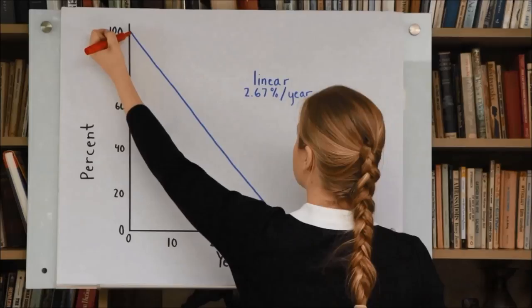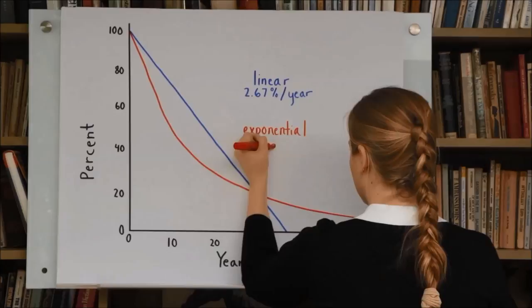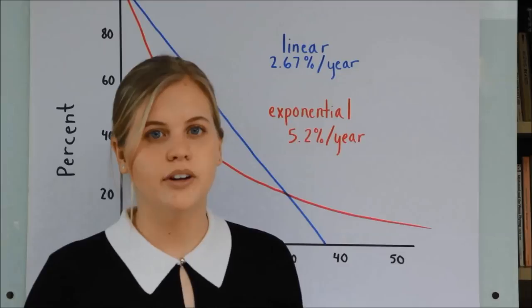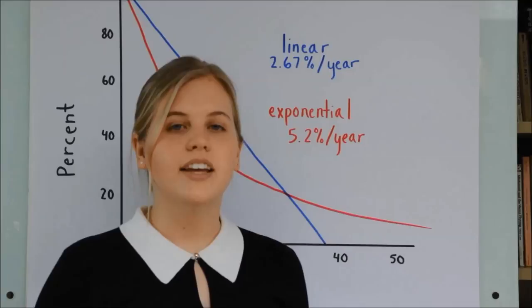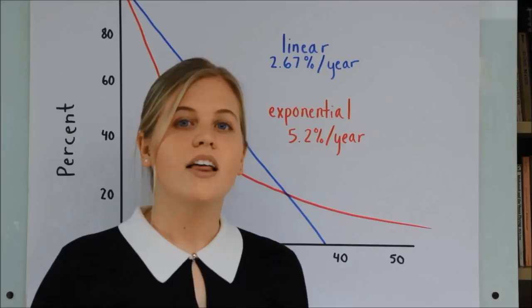On the other hand, if reductions are a fixed percent of remaining emissions, achieving 80% reduction in 30 years requires a rate of 5.2% of remaining emissions each year. The exponential case is based on the concept of low-hanging fruit, the idea that there are some easy reductions at the beginning. However, the linear case is a better approximation if there is a gradual increasing carbon tax or carbon fee, as we will discuss in our next video.